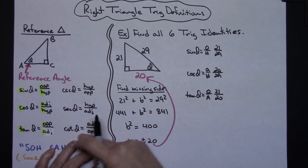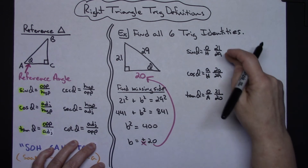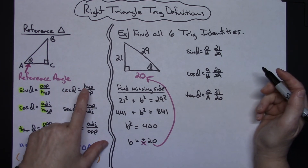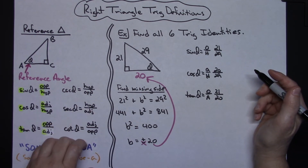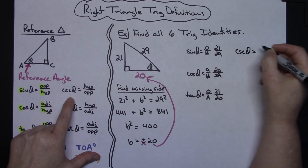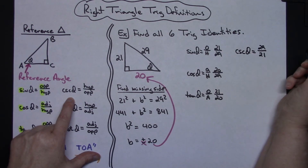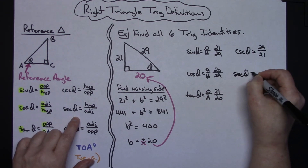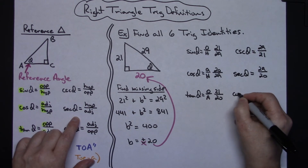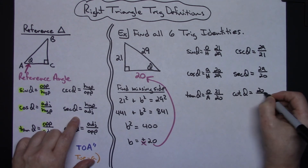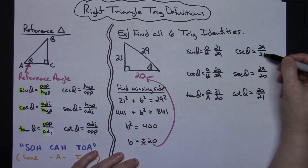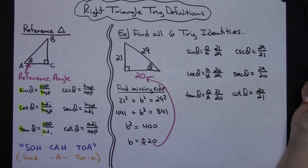Since cosecant, secant, and cotangent are reciprocals of sine, cosine, and tangent, if you're sure you haven't made a mistake you can just flip each one. Cosecant of theta is 29 over 21; secant of theta is 29 over 20; and cotangent is 20 over 21. These two are improper fractions and that's fine — we want to leave them that way when dealing with right triangle trig.